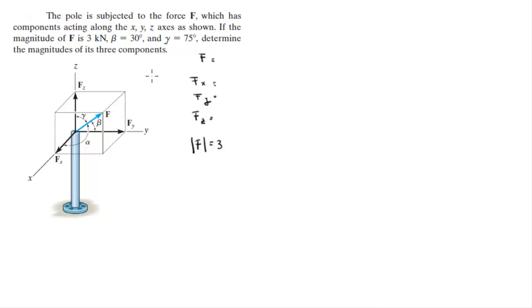So you know that since you got beta which is the angle that it forms with the y axis is 30 and you got the angle that it forms with the z axis which is 75.